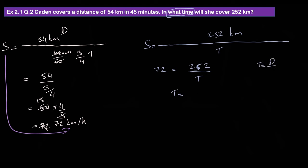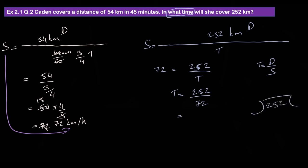Time equals distance by speed. Distance 252 divided by 72.